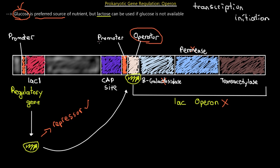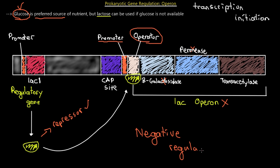We also have two other sites — the promoter and the cap site — that are not being used in this regular arrangement. These two sites are going to play a crucial role when we look at the positive regulation of the lac operon, because what we just described is the negative regulation of the lac operon.